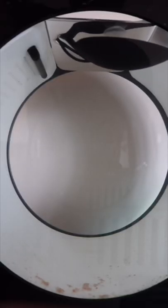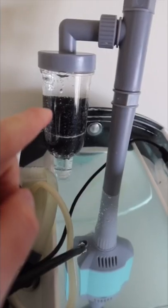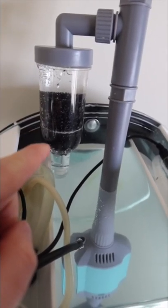I gently scoop the jellies out with a ladle and set them aside in a cup while I clean. The vacuum has two sponges that are used to filter the water.